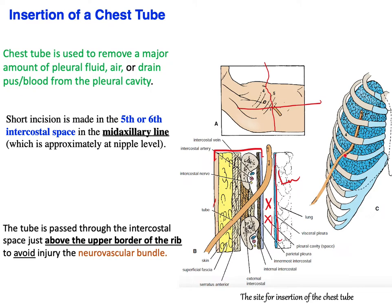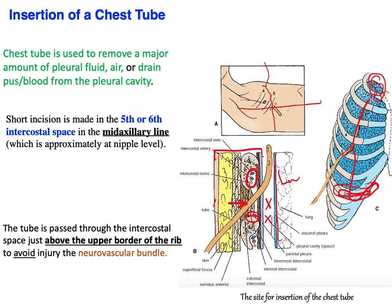A chest tube — larger than a needle — can be inserted to remove larger amounts of pleural fluid, blood, and air. It is done through a small incision at the mid-axillary line at the fourth, fifth, or sixth intercostal space, usually at the level of the nipple. The tube passes through skin, superficial fascia, serratus anterior, external intercostal, internal intercostal, innermost intercostal lined by endothoracic fascia, and parietal pleura into the pleural cavity. The tube can be directed up for pneumothorax or down toward the costal diaphragmatic recess for fluid and blood drainage.